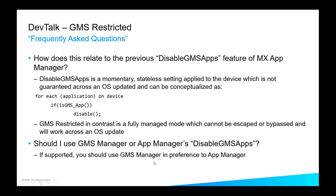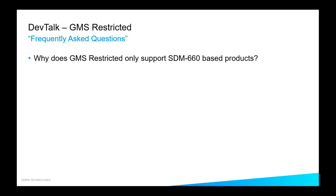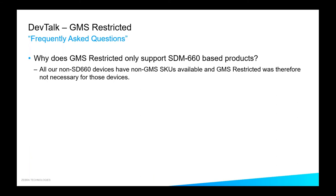Which one should I use? You should use GMS Manager restricted mode where possible in your deployment. Why do we only support the SD660-based products? On the non-660-based products — like the TC51, TC56, TC70X, TC75 — we didn't need to because they continue to receive AOSP SKUs, which get LifeGuard updates and are now on Oreo. There's no need to change on those devices.